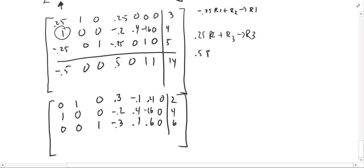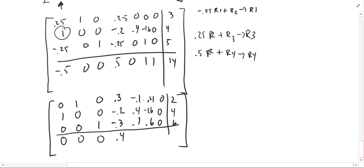For the bottom row, I do positive 0.5 times row 2 plus row 4. That gives: 0, 0, 0, 0.4, 0.2, 0.2, 1, 16. There are now no negatives in the bottom row, so we are at our solution.